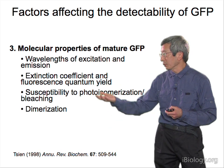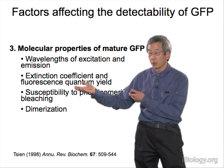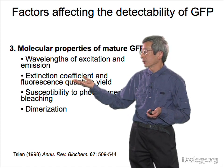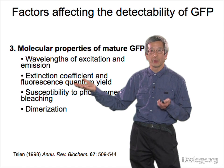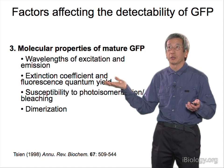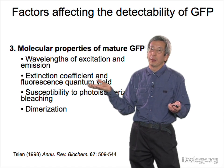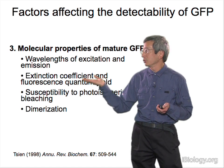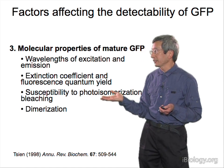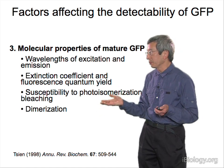The molecular properties of mature GFP: we want to improve the wavelengths of excitation and emission to make them easily detectable. We want to improve the extinction coefficient — the ability to absorb light — and the fluorescence quantum yield, which is how probable re-emission is once light is absorbed. The best GFPs now have quantum yields of 70 to 80 percent, and theoretically you can never exceed 100 percent, so there's not much room left to improve that. We are still very interested in preventing photoisomerization or bleaching, unless we specifically want tricks that require bleaching GFP — and I'll briefly mention some of those.